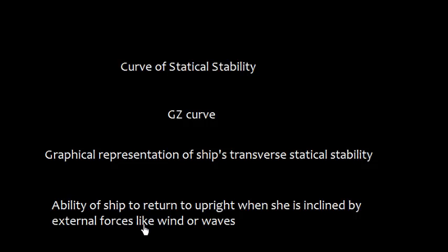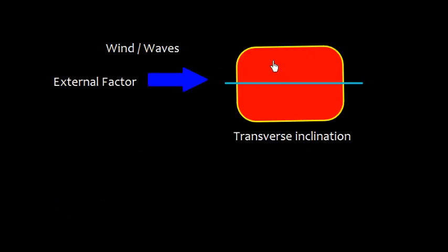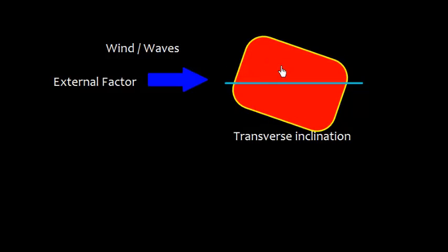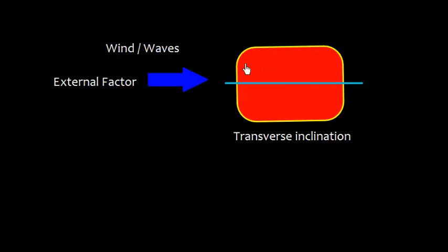This is called heeling of the ship. Suppose this is a vessel and we look in the transverse direction, that is port side and starboard side direction or athwartship direction. We have this external factor like wind or waves and the ship inclines like this. However, she is able to come back to the upright condition. That is the study we have to do in transverse statical stability.